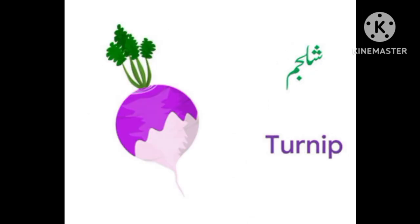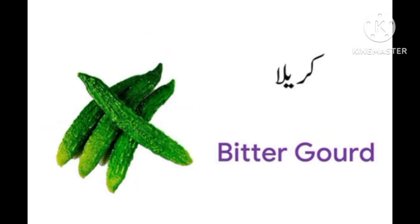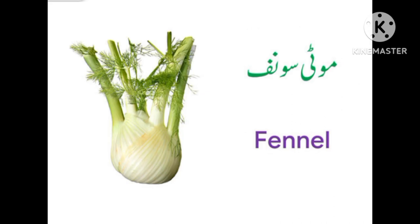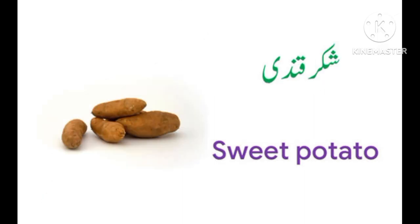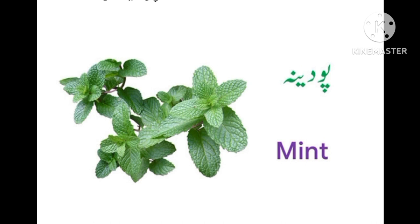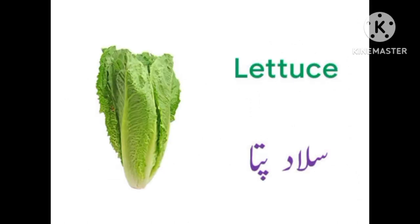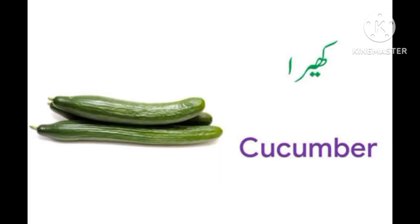Turnip (shaljam), bell pepper (shimla mirch), bitter gourd (karela), coriander (dhaniya), fennel (moti saunf), beetroot (chukandar), sweet potato (shakar kandi), mint (pudina), cauliflower (phool gobi), lettuce (salad ke patte), cabbage (band gobi), cucumber (kheera).